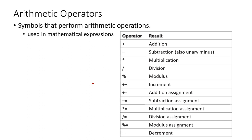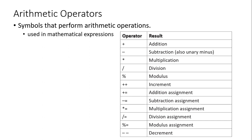Let's look at arithmetic operators. They are used to perform arithmetic calculations and include addition, subtraction, multiplication, division, the modulus operator (which gives the remainder), increment (++), decrement (--), and compound assignment operators such as +=, -=, *=, /=, and %=. Since you know C programming language, I will not venture into primary class calculations.